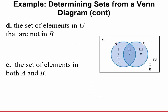The set of elements in U that are not in B: D and E are in B, so not in B would be A, B, C, F, and G. The set of elements in both A and B — the overlapping list two region — is just the set containing element D. That's the only thing they have in common.